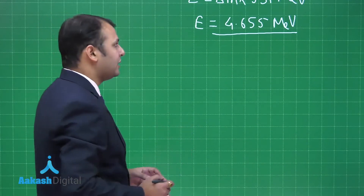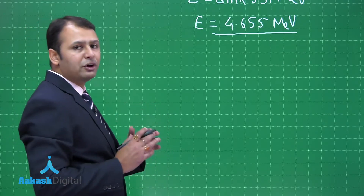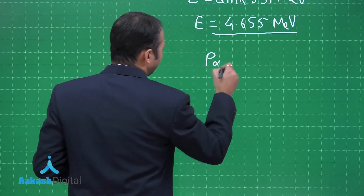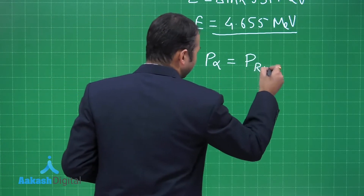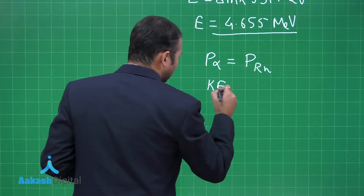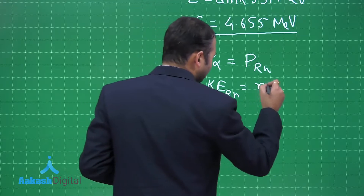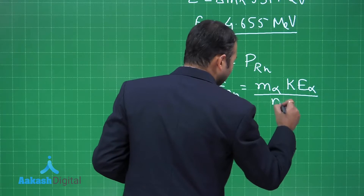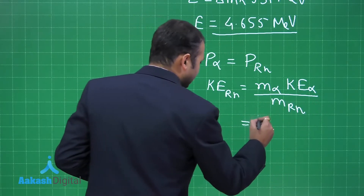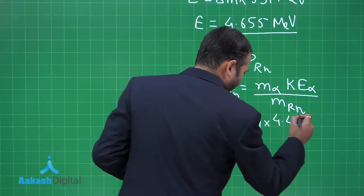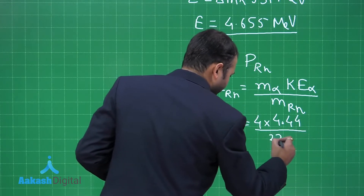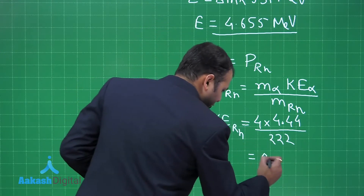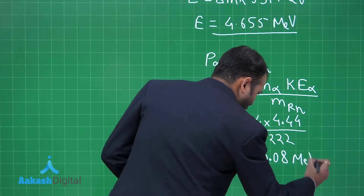We need to find the kinetic energy of the radon nucleus first. Since momentum of the alpha particle equals momentum of the radon particle, the kinetic energy of the radon particle is given by: KE_radon = (mass of alpha × KE of alpha) / mass of radon = (4 × 4.44 MeV) / 222. This gives the kinetic energy of radon as 0.08 MeV.